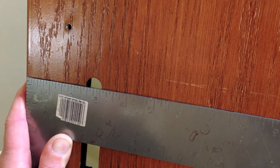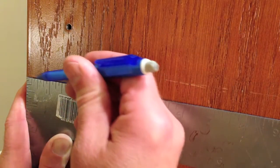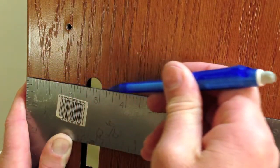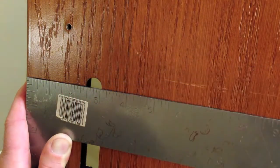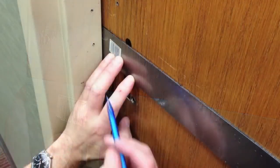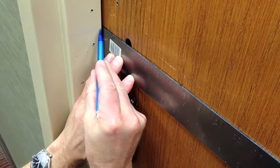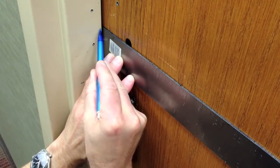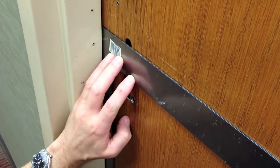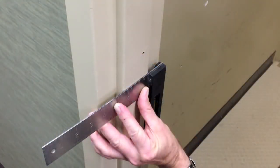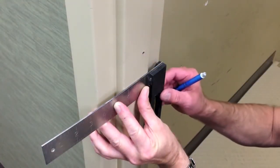Draw a horizontal line through the center of the cylinder tailpiece cutout and onto the strike side of the door. Close the door, mark a dot on the frame where the center line meets the frame. Use the square to extend that line across the frame.